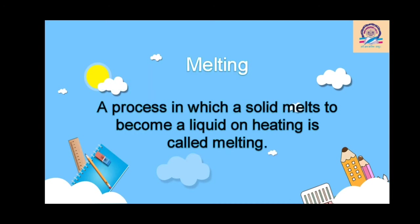The last major concept of this chapter is melting. As the name suggests, the thing which melts down is melting. But in scientific terms, a process in which a solid melts down and becomes liquid on heating is called melting. In Hindi, we call it 'pigal jana'. The best example is an ice cube — an ice cube on heating converts into water. That is, solid melts down and becomes liquid. This is nothing but the process of melting.